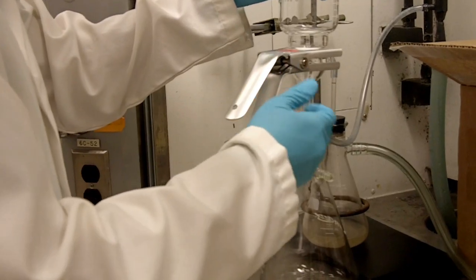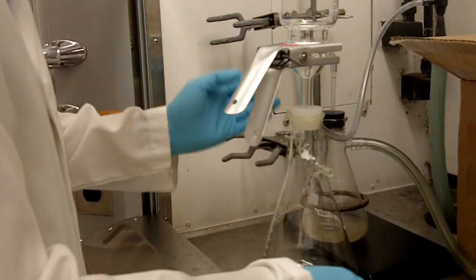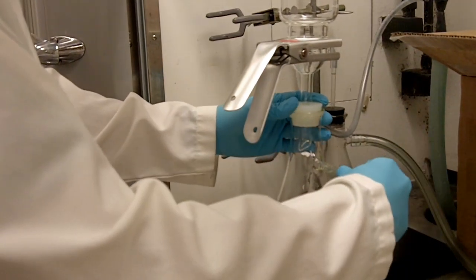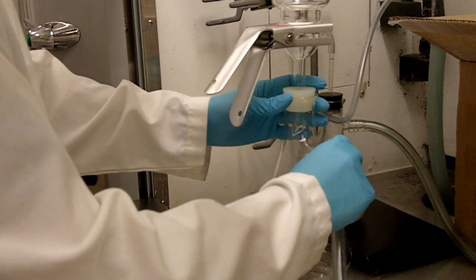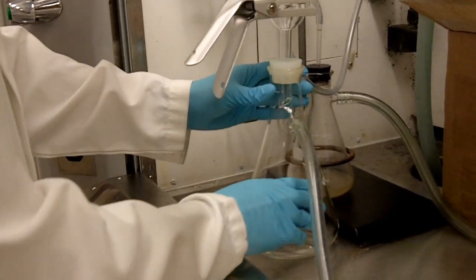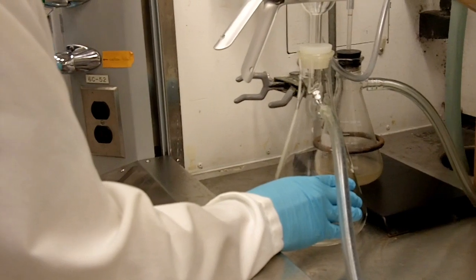So after you have assembled and secured the apparatus, what you need to do right now is hook up the vacuum. So the tubing goes here, after you hook up the tubing, then you can turn on the water.